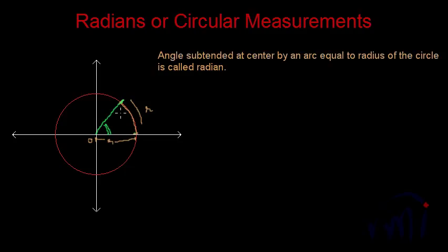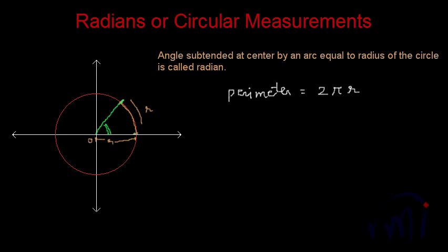Now you must be having one question — this angle may vary. But actually this angle is always a constant. The angle subtended by the radius of the circle at the center of the circle is always a constant. If we talk about the perimeter of the circle, the perimeter is 2πR. We also know that the angle subtended by any arc is proportional to the length of the arc. If I call this arc as AB, then angle AOB is directly proportional to the length of arc AB.